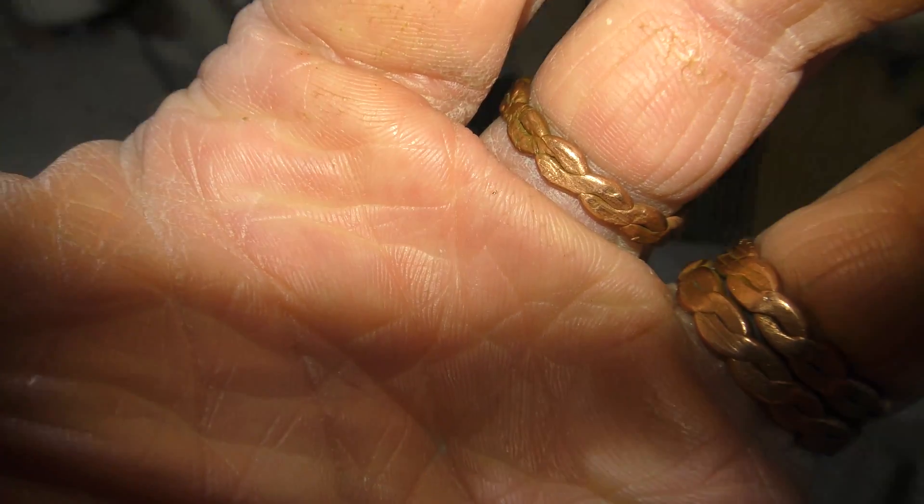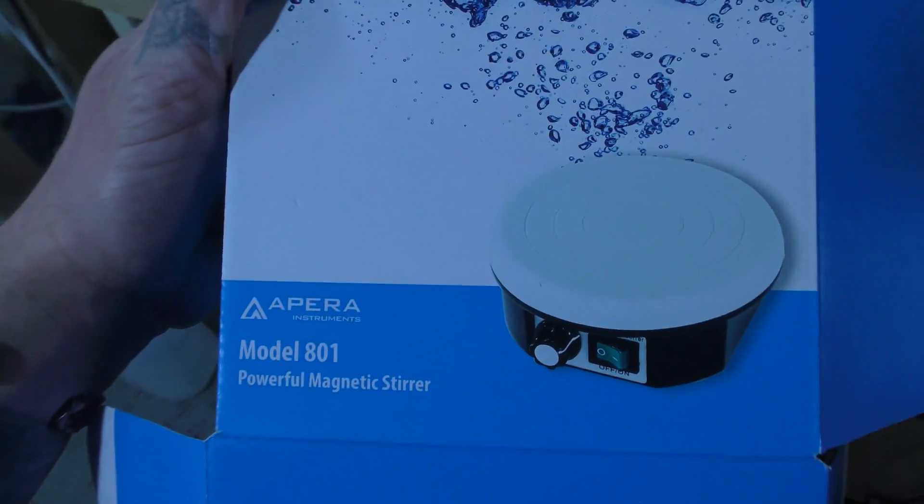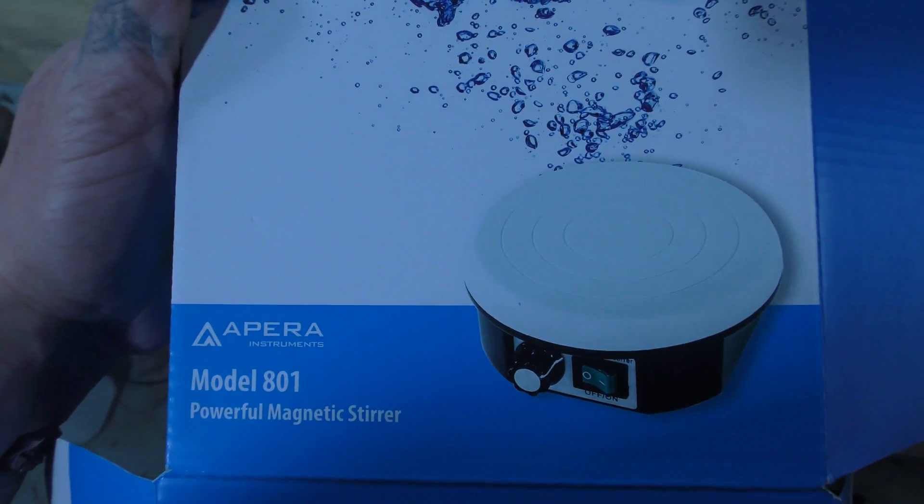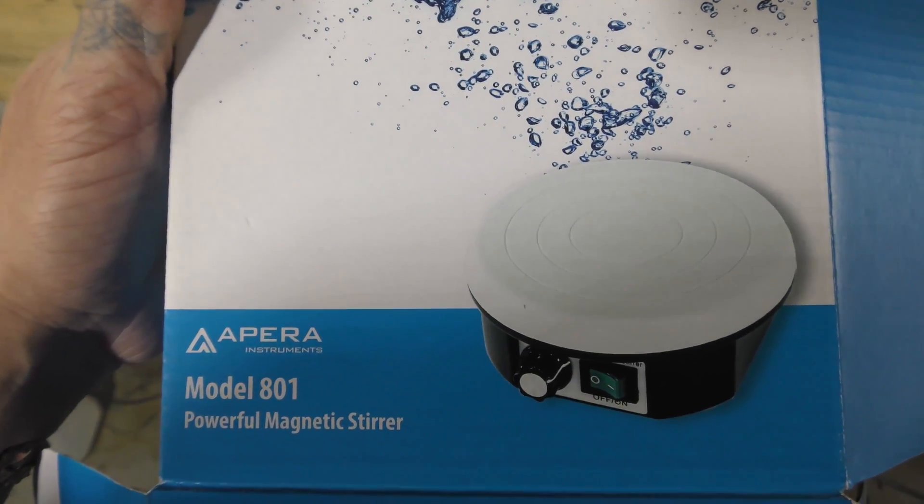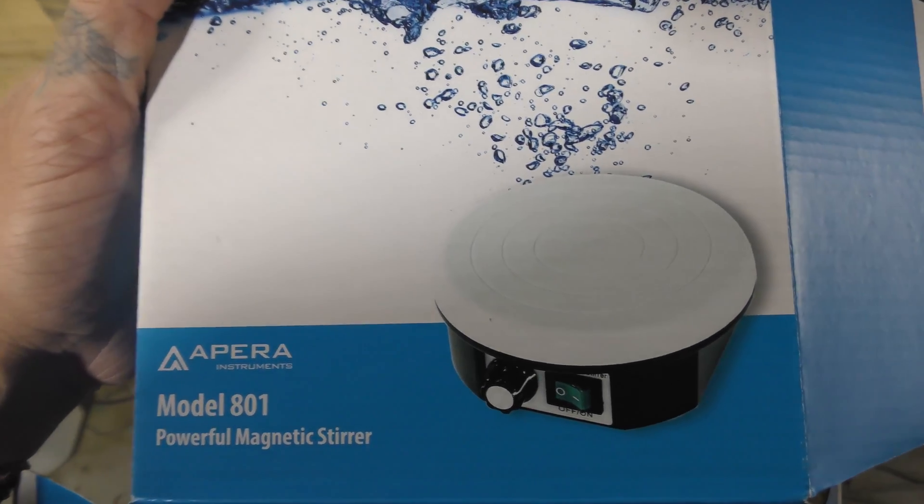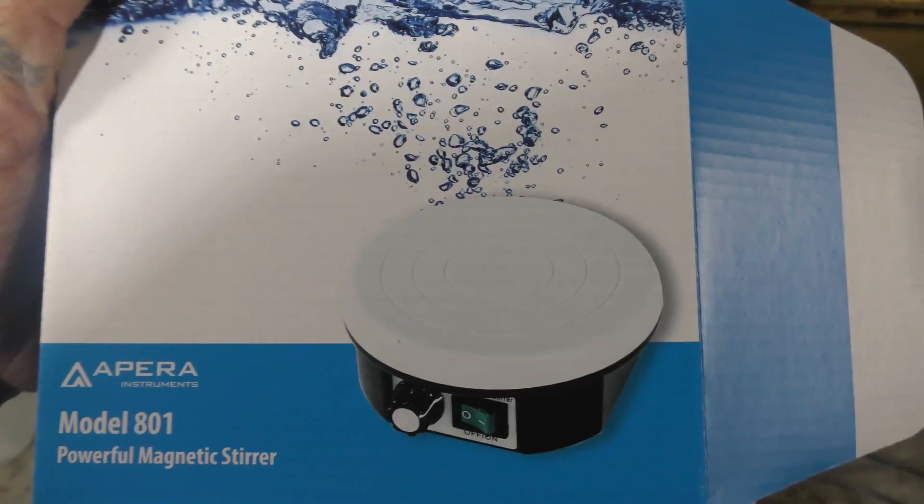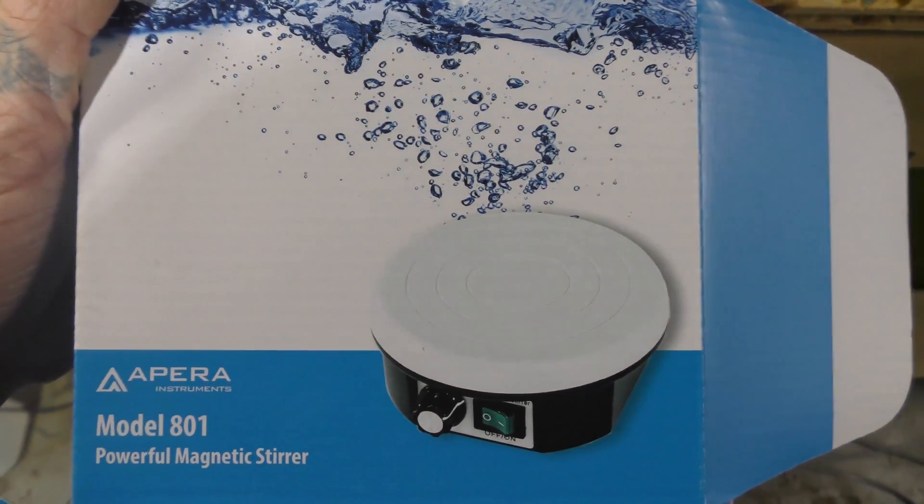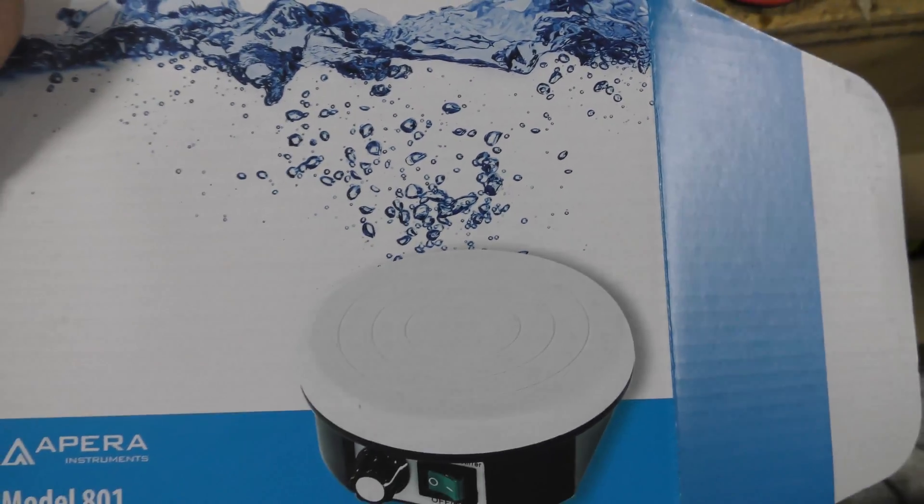So I'll show you what brand this is. This right here, that's an April Model 801. That is an amazing magnetic stirrer for how many gallons that's actually pulling around.